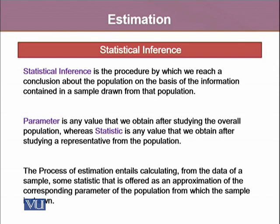There are a few other important definitions. The parameter is any value that we obtain after studying the overall population — these are the true values and they stay constant. Whereas the statistic is any value that we obtain after studying a representative sample from the population. Sample statistics are often random variables and they vary from sample to sample, even if we draw various samples from the same population.